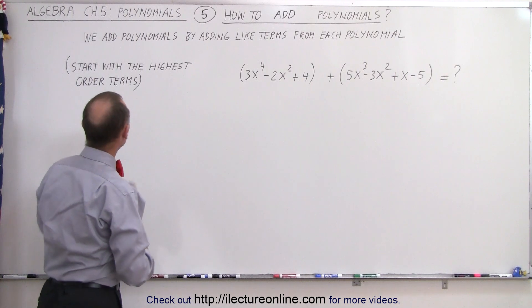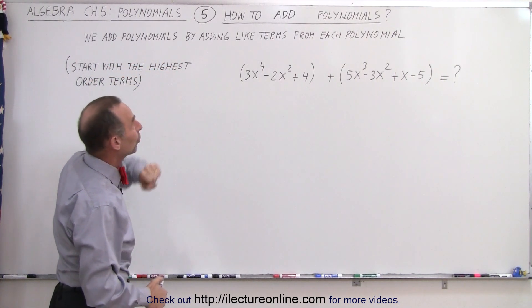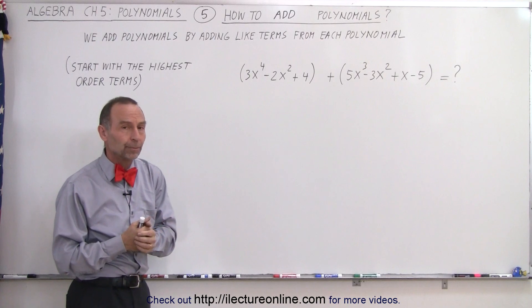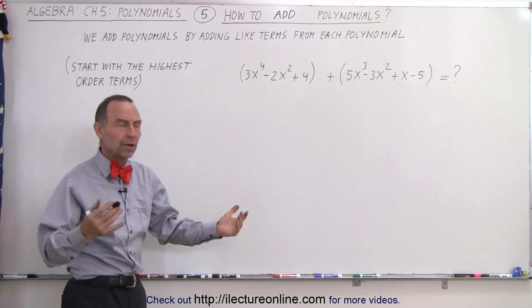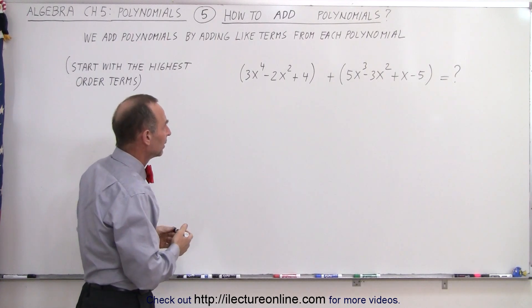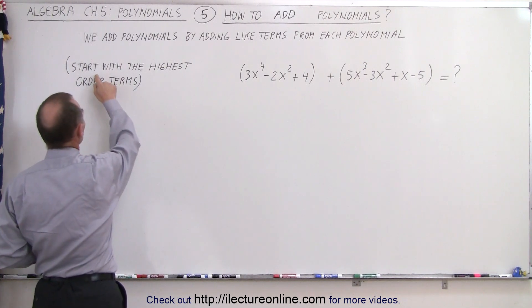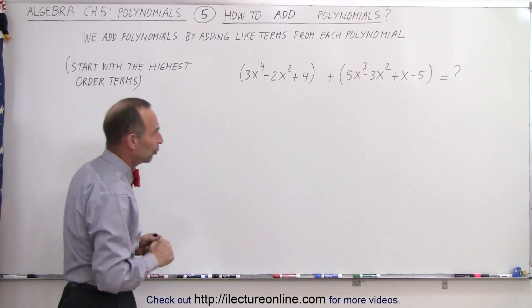Well, we do so by adding like terms from each polynomial. It's kind of like simplifying a polynomial when you put it all together. And notice, again, we're going to start with the highest order term.